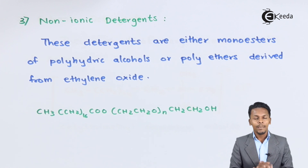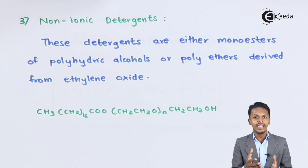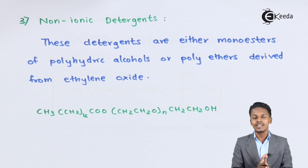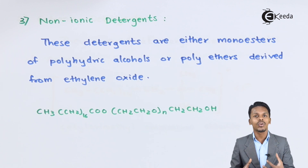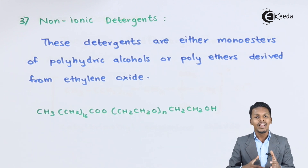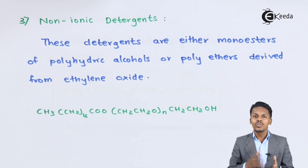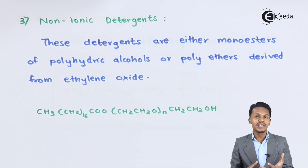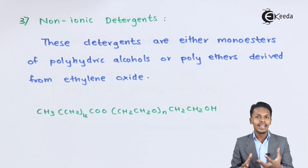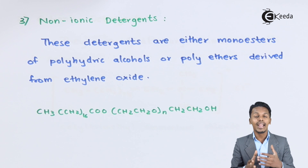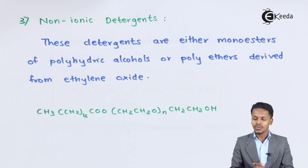Both soaps and detergents are cleaning agents. However, detergents are more widely used nowadays because they are soluble in any kind of water — whether hard water or soft water — and act as a cleaning agent in both. Soaps, on the other hand, cannot be used in hard water because hard water contains calcium and magnesium. When soap molecules interact with calcium and magnesium, they form a white precipitate, which is why soaps are avoided in hard water, as this also contributes to water pollution.